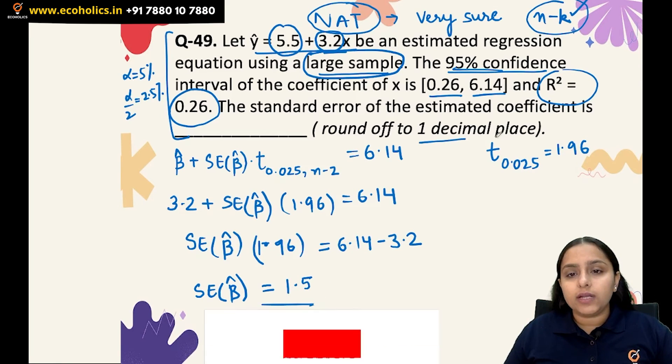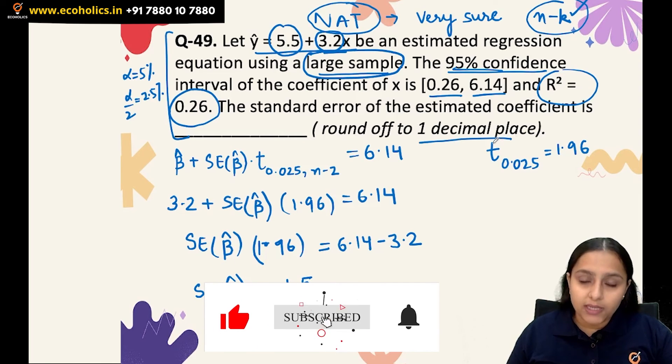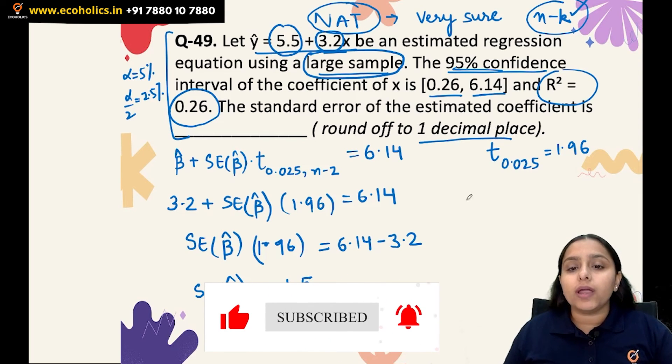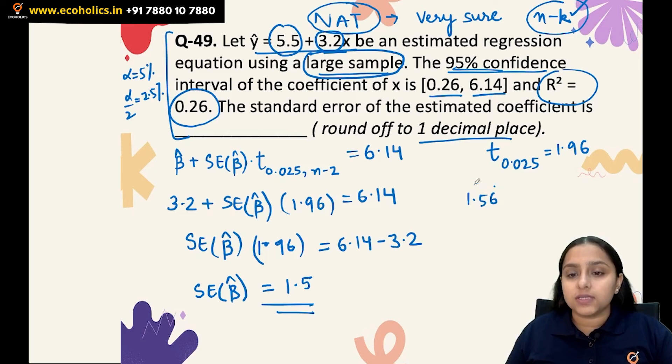They have clearly written that you just have to round off to one decimal place. So be very sure, if you are getting for example 1.56, always write 1.5 as your answer. So the correct answer here is 1.5.